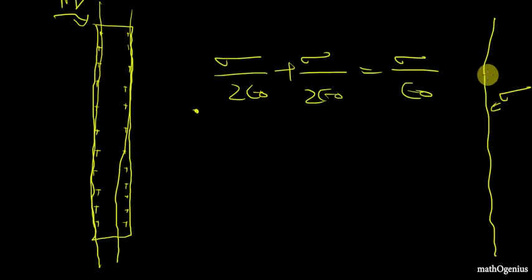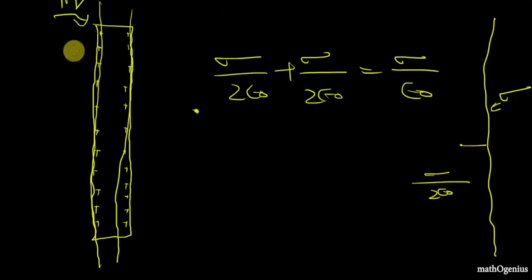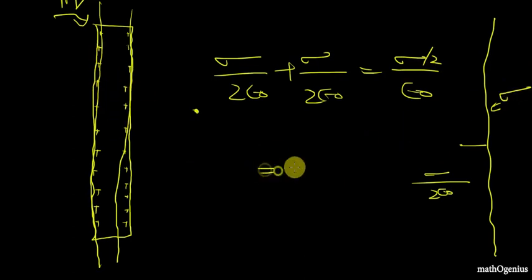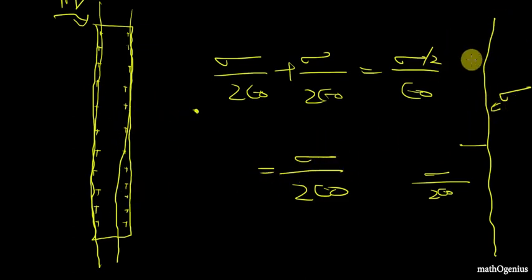So if there is a charge sheet with surface charge density σ giving electric field σ/2ε₀, and the same charge is moved onto a conducting sheet, there will be two surfaces each with surface charge density σ/2. So for the metal sheet we also get (σ/2)/ε₀ + (σ/2)/ε₀, which is σ/ε₀ — but it is due to two sheets each with half the original surface charge density.